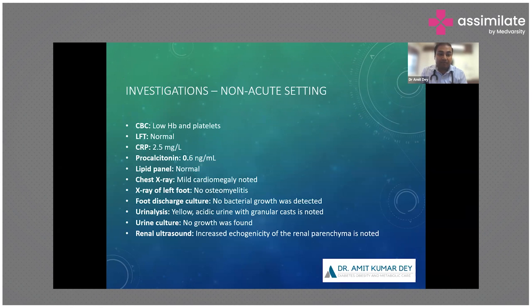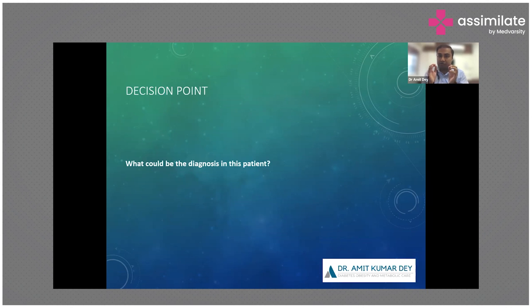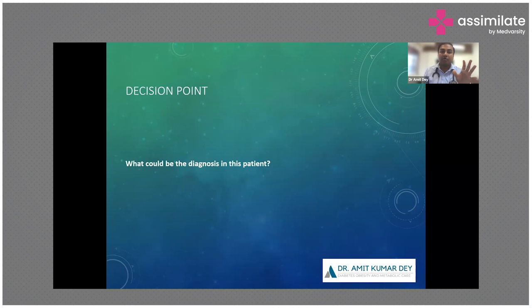In the non-acute settings, the patient had previously shown low hemoglobin and platelets, normal CRP, and a normal lipid panel. X-ray showed mild cardiomegaly. Foot discharge culture and urine culture both showed no bacteria detected, ruling out infection as the cause of symptoms. So there was no evidence of infection per the culture reports. This looks like a case of heart failure — breathlessness with elevated NT-proBNP — along with acute kidney injury. An important point: we need to know the baseline creatinine to determine how much it has risen acutely and to confirm underlying diabetic kidney disease.